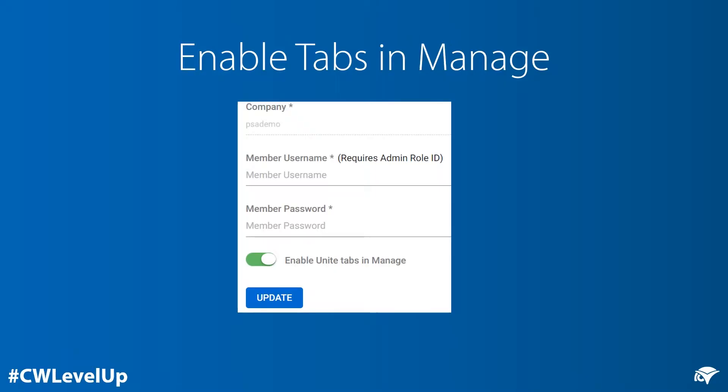When you log into Unite and set up your billing platform, which is your connection to Manage, you're going to see a button that says Enable Tabs in Manage. It's the key step for allowing Unite to add some of the many features that you may not be aware of. By doing this, you'll be able to see a Unite tab in every ticket and every company record for all of the clients that are set up in your Unite.